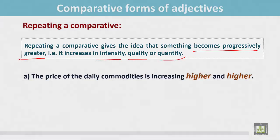Here are some examples. The price of the daily commodities is increasing higher and higher. Here the adjective is repeated and it gives the idea that something is becoming progressively greater.